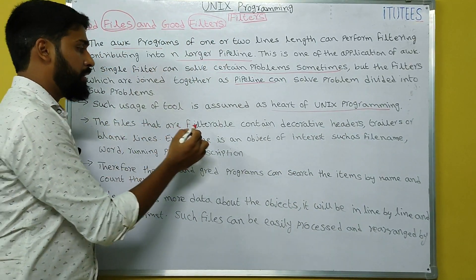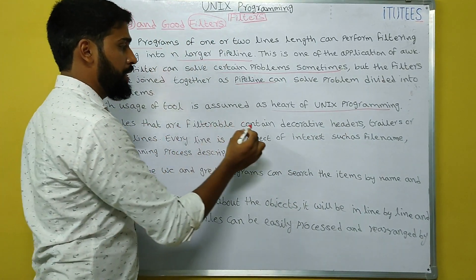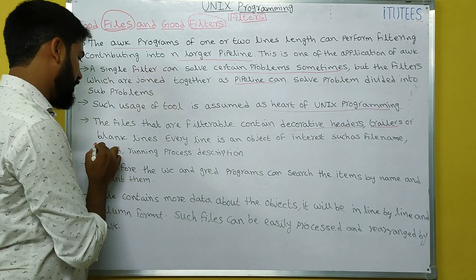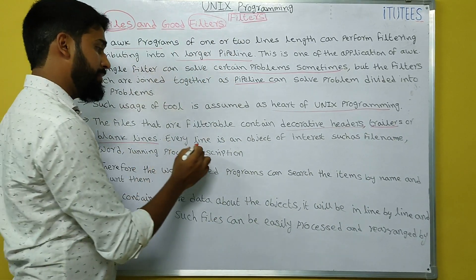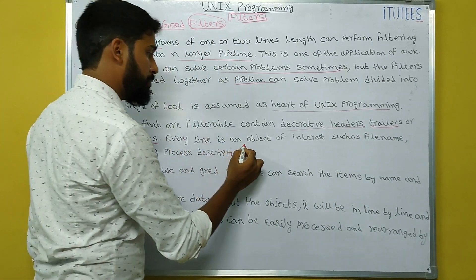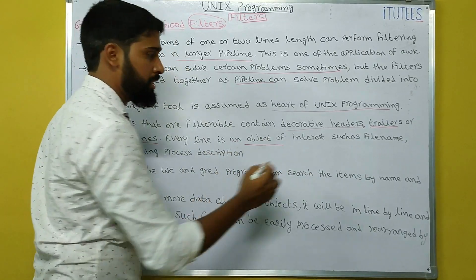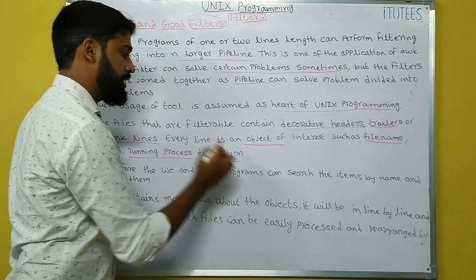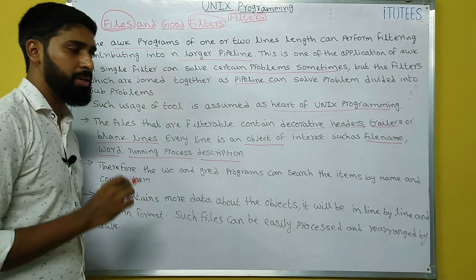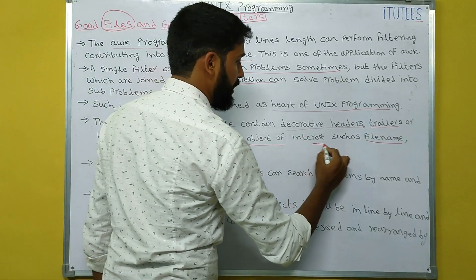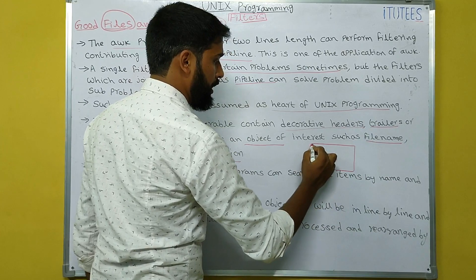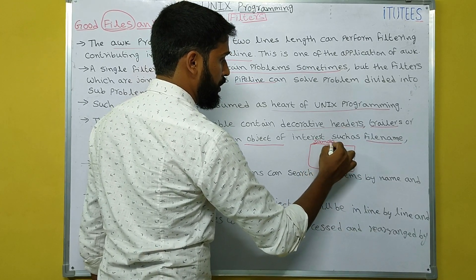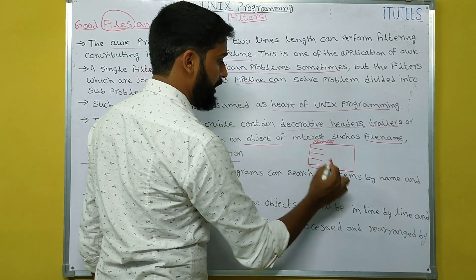The files that are filterable contain decorative headers, trailers, or blank lines. Every line is an object of interest such as a file name, word, running process, or description. If you observe GREP, SED, or AWK, you are going to apply the pattern on each line.